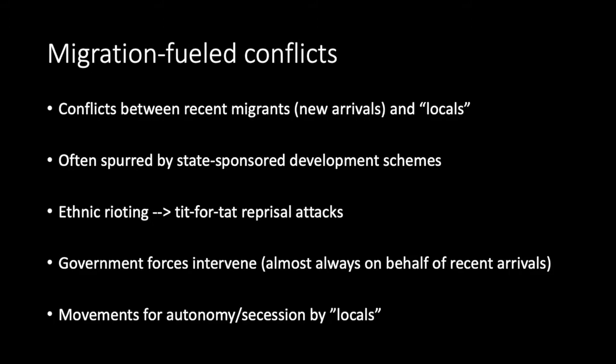Once this begins, competition for resources between locals and migrants sparks low-level decentralized conflict, often taking the form of ethnic rioting—seemingly spontaneous outbreaks of violence that can spiral, with initial attacks met by ever-larger tit-for-tat responses fueled by revenge, fear, and even rumor. Eventually, state forces intervene, typically taking the side of their co-ethnic recent migrants. At this point, many of these conflicts become civil wars, with locals taking up arms to secede from the central government or gain greater regional autonomy.